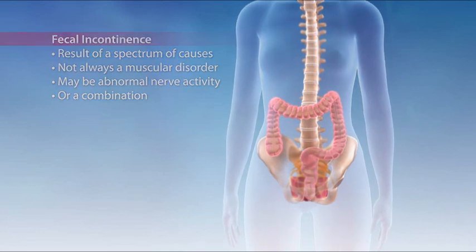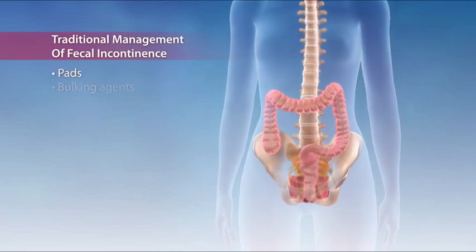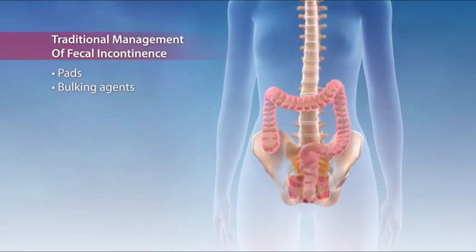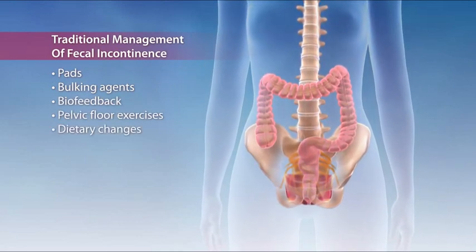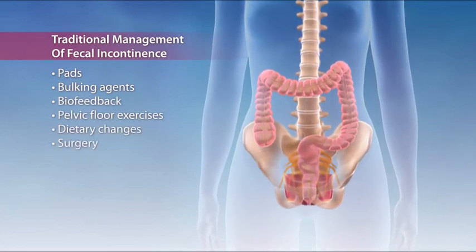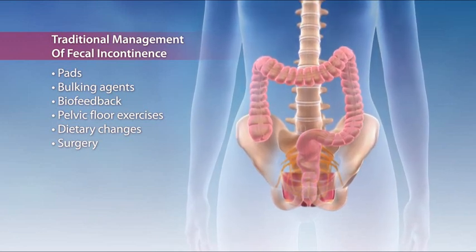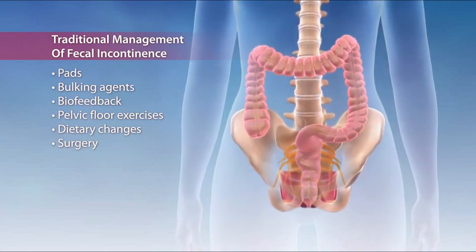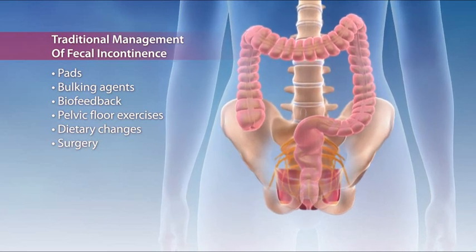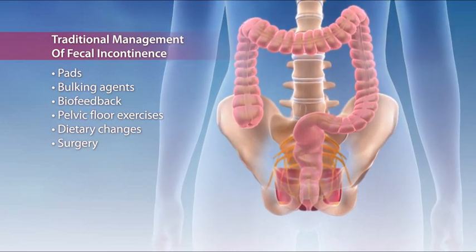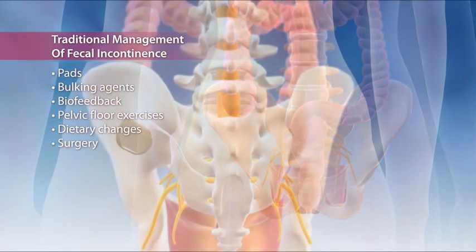Traditional initial management of fecal incontinence includes pads, bulking agents, biofeedback, pelvic floor exercises, dietary changes, or surgery, particularly to the anal canal or sphincters. While these approaches may alleviate fecal incontinence for some, they are not effective for everyone and may not address the causes of fecal incontinence.